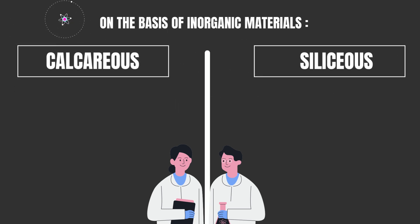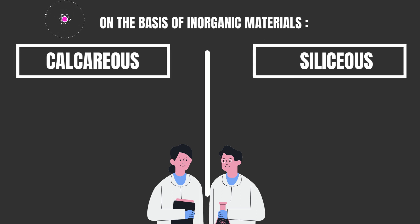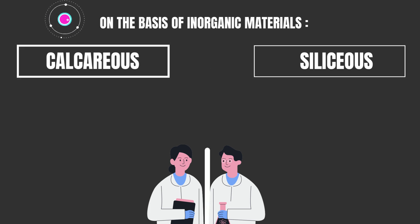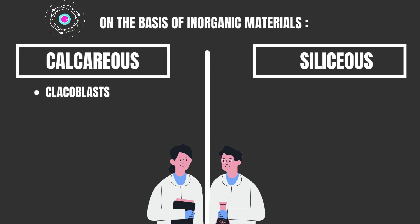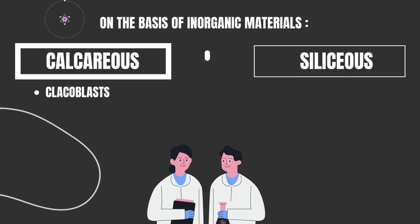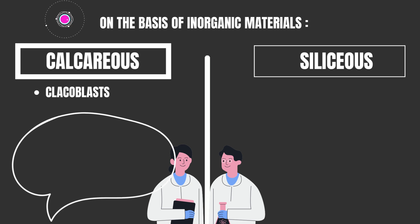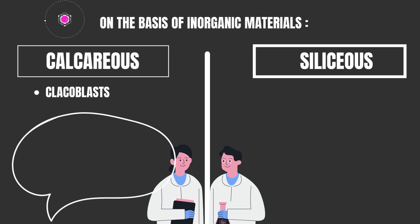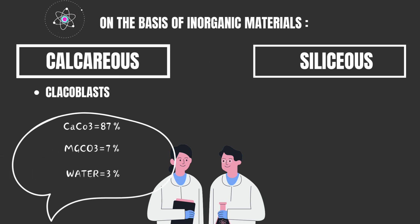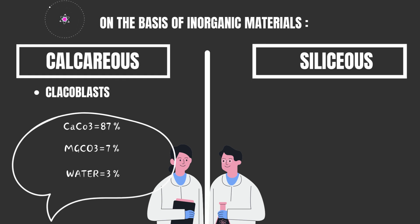Calcareous spicules: in these spicules the inorganic cover is formed of calcium carbonate. These are secreted by mesenchymal cells called calcoblasts and are found in members of class Calcarea. Chemically, each calcareous spicule is formed of calcium carbonate 87%, magnesium carbonate 7%, water 3%, and some small quantities of other minerals.